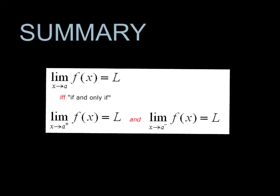In summary, we're looking at one-sided limits — that is, the limit from the right as well as the limit from the left — and we know that the limit as x approaches a exists and is equal to L as long as the left and right-hand limits are also equal to L.